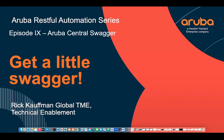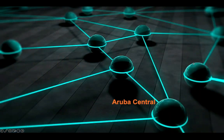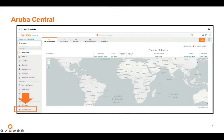Thank you for joining. This is the Aruba Restful Automation Series, Episode 9 — Aruba Central Swagger. We're going to get a little Swagger, and all it is, is a graphical user interface to let us learn the APIs in Aruba Central, and we're going to see what kind of information we get back so we can write our scripts to handle that information accordingly.